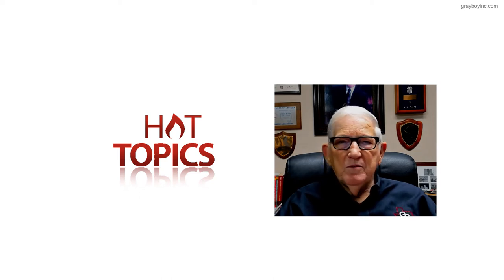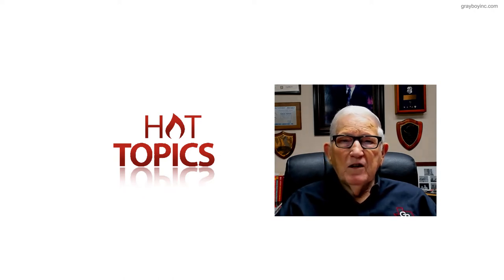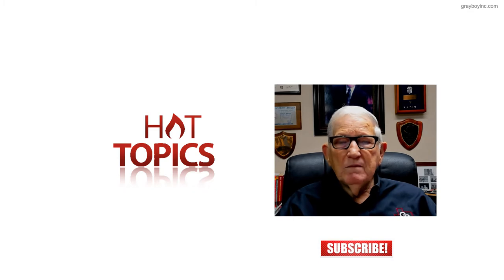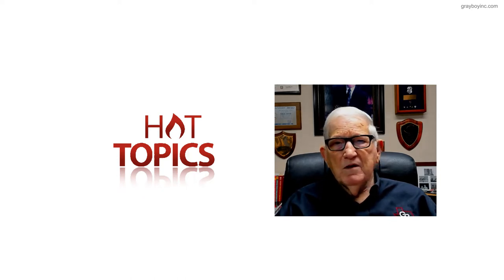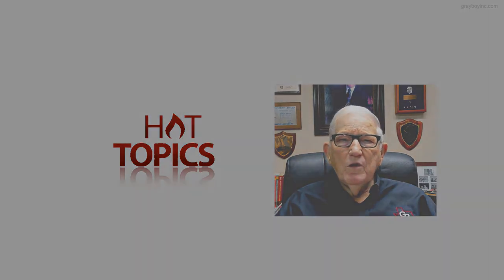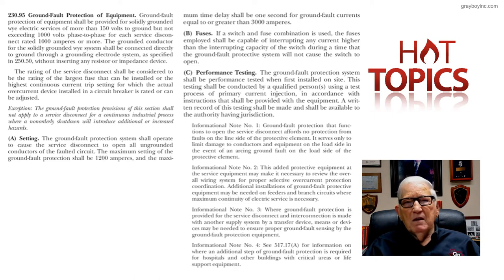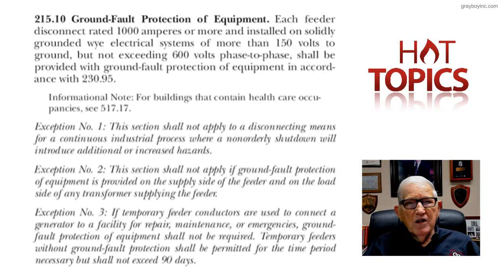Welcome to Hot Topics. We have a subject today that I've received a number of questions on pertaining to ground fault protection of equipment. We will be discussing 230.95A through C, 240.13, 210.13, and 215.10. But before we get into this in any depth, mainly reviewing 230.95A through C with the four notes listed in part C, we pick up really the rules for ground fault protection of equipment in detail. If we have a feeder, we have to look at 215.10 on page 72 of the code.